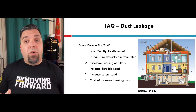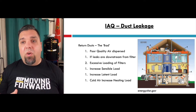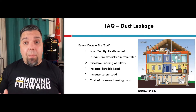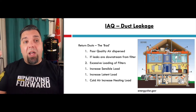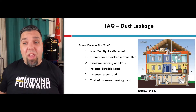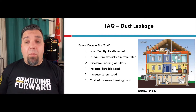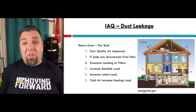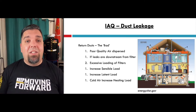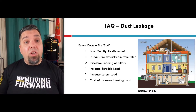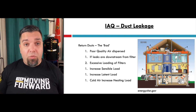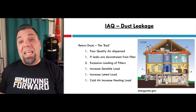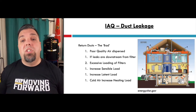Excessive filter loading will happen with all that leakage coming from a dusty attic or air from outside. In heavy pollen seasons you can easily pull pollen up into the attic — you can actually see it in the insulation where air was moving through it. All that stuff in a leaky return duct will load up that filter and you'll have to replace it very often. You're also going to increase the sensible and latent loads, and cold air from an unconditioned space increases the heating load in winter.